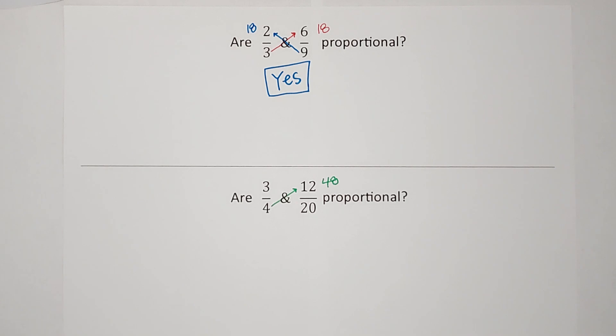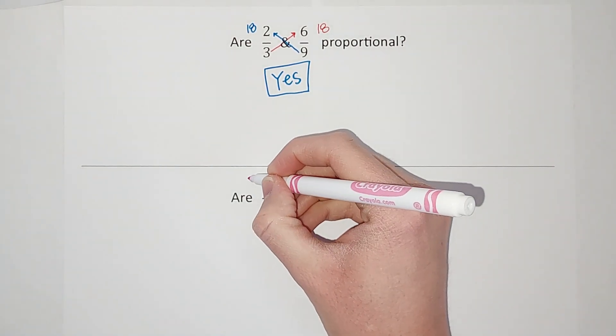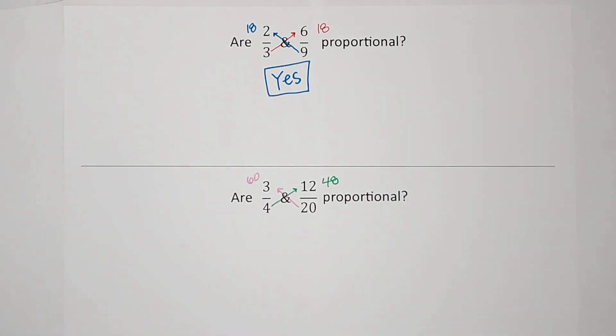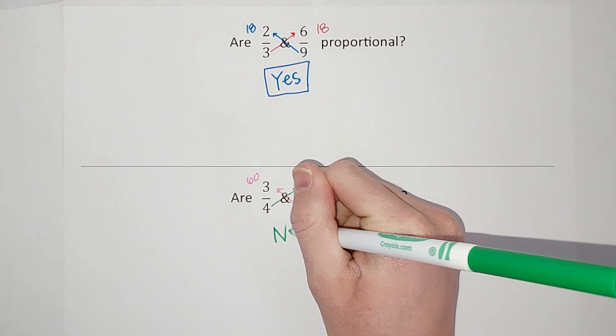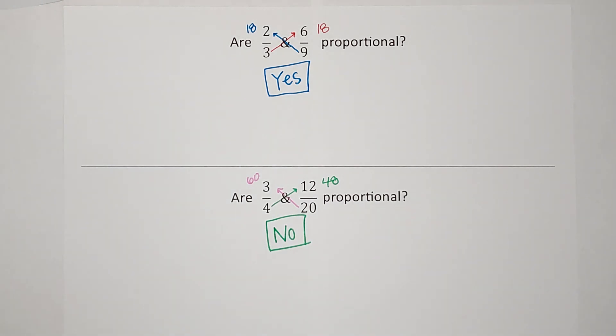Then we're going to do the same thing on the other side: 20 times 3, which gives me 60. Last time I checked, 60 and 48 were not the same number, so no, these two fractions are not proportional. Hopefully that made sense. Bye!